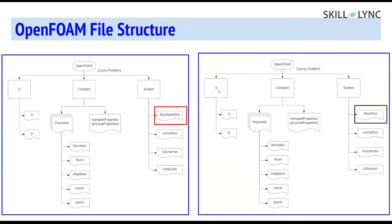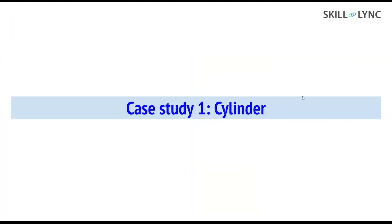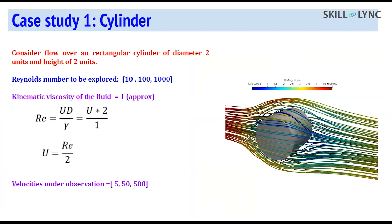We'll be doing two case setups today. The first is a cylinder with two units of diameter and height. We'll explore three different Reynolds numbers: 10, 100, and 1000 - limiting cases to laminar flow. Reynolds number equals U times D divided by nu, so velocity equals Re divided by 2, giving velocities of 5, 50, and 500 respectively.